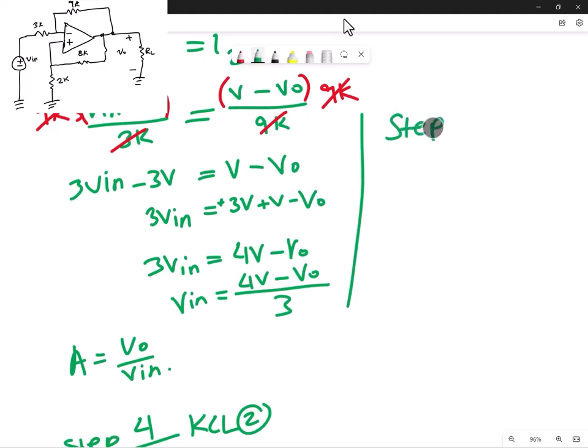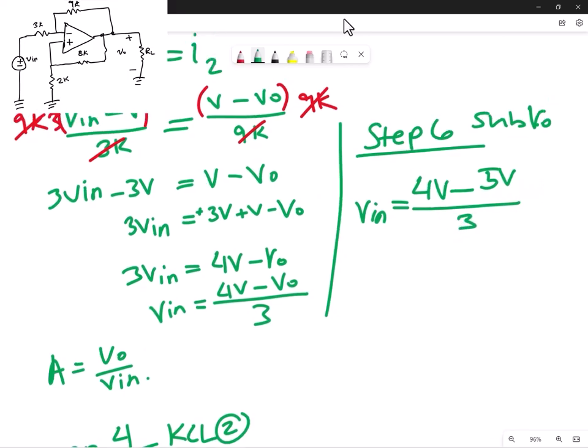So let's go with step six, substitute VO. Vin is equal to 4V minus, instead of writing VO, we can now write 5V. Divide that by three, and that's looking fine. Let's evaluate this a little bit. So 4V minus 5V is equal to negative 1V. So I'll just write negative V all over 3. So now we have an expression for Vin that's only in terms of V.